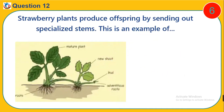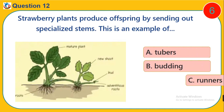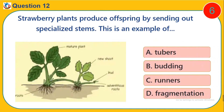Question 12. Strawberry plants produce offspring by sending out specialized runners. This is an example of: A. Stolons. B. Budding. C. Runners. D. Fragmentation.